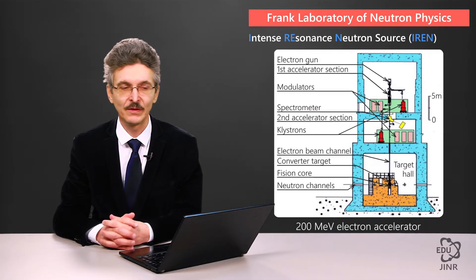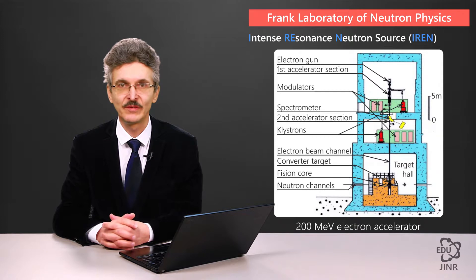How is the source designed? The 200 MeV accelerator is arranged vertically, with its beam reaching the assembly unit either from a fissionable or a heavy substance, for instance, tungsten.